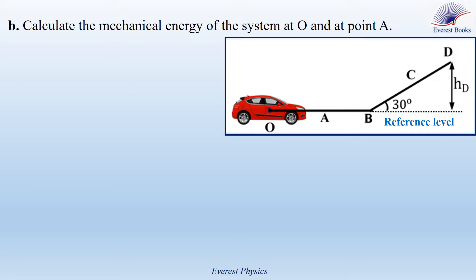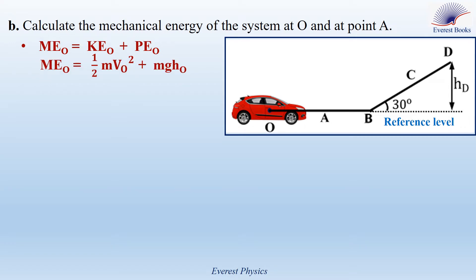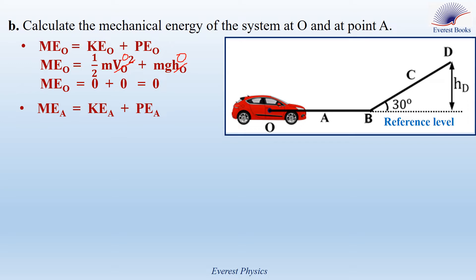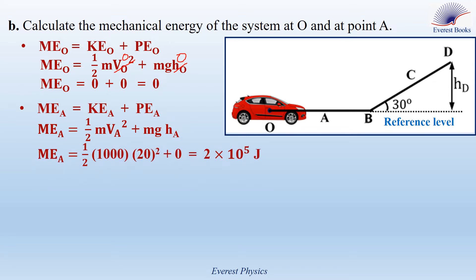Part B: Calculate the mechanical energy of the system at O and at point A. At O, ME = KE + PE = ½mVO² + mgHO. Since VO = 0 and HO = 0 (O is on the reference level), the mechanical energy at O equals 0. At A: MEA = ½mVA² + mgHA. Substituting m = 1000 kg, VA = 20 m/s, and HA = 0, the mechanical energy at A equals 2 × 10⁵ joules.